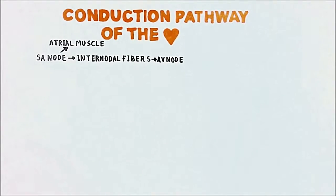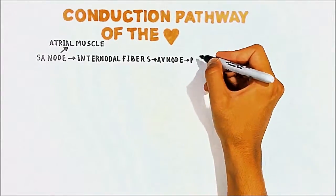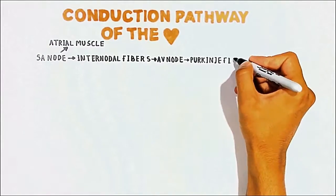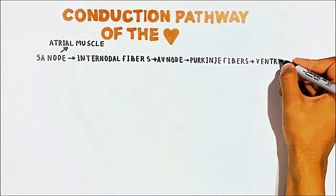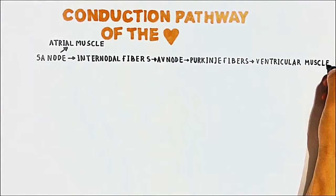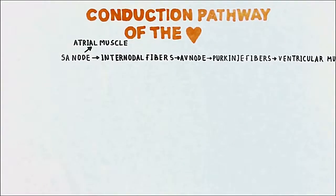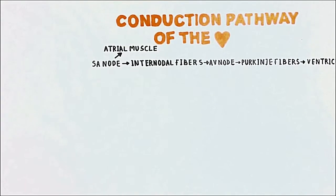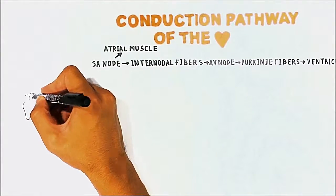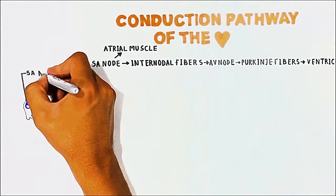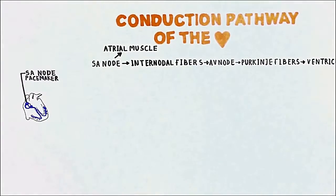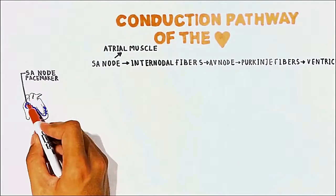After that, the electrical signal reaches the Purkinje fibers and spreads across the entire ventricular muscle and it contracts. It is very important to note that in a normal heart the SA node is the pacemaker because it has the highest intrinsic rhythm. The SA node produces 100 action potentials per minute.